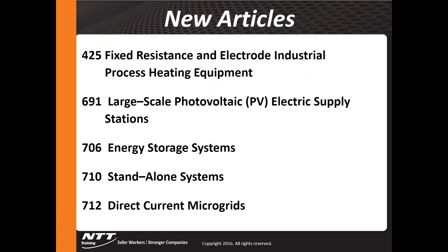Let's look at the five major new articles within the code. We've got Article 425, which covers fixed resistance and electrodes; Article 691, large-scale photovoltaic electric supply stations; Article 706, energy storage systems; Article 710, standalone systems; and Article 712, direct current microgrids. Articles 691 through 712 all represent new energy systems that we're beginning to look at across the United States.